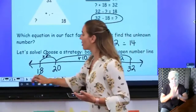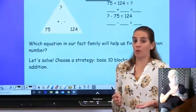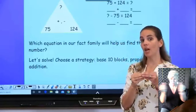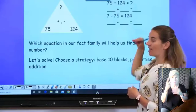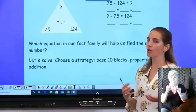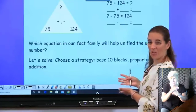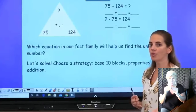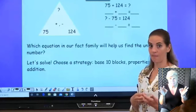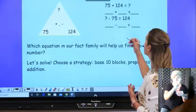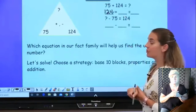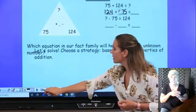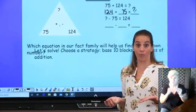Let's try another one. This time the sum is missing at the top. We know that if we take these two add-ins and put them together, we'll get our sum. I can already see the number sentence with the question mark on the right-hand side. Can you help me fill in the other equations? If I've got 75 plus 124 equals my unknown number, I can switch those two add-ins to form the next sentence. So 124 plus 75 equals my question mark. Now I have two number sentences that can help me solve.